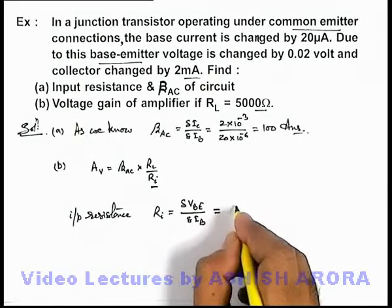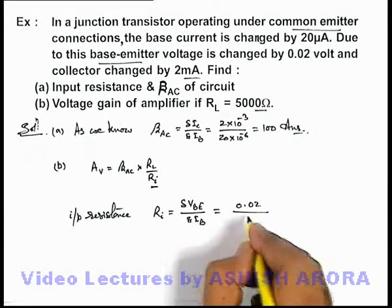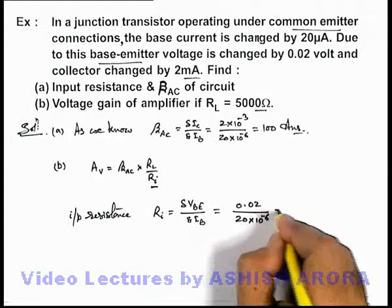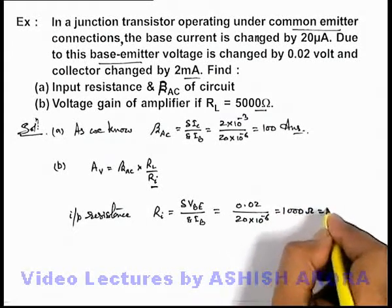We just substitute the values. This will give us 0.02 divided by base current variation is 20 × 10^-6. So this will give us the value of 1000 ohms, that is 1 kiloohm.